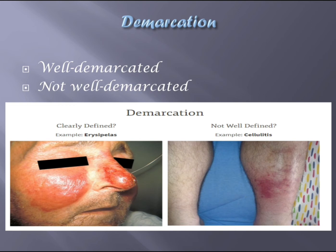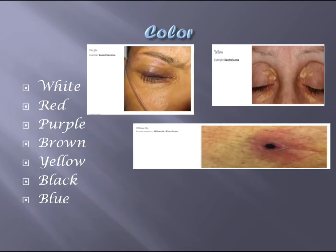Demarcation: is the lesion well demarcated or not? Erysipelas — you can see it is very well demarcated. However, cellulitis is not well demarcated; it is very irregular and not well defined. That is an example of poor demarcation.